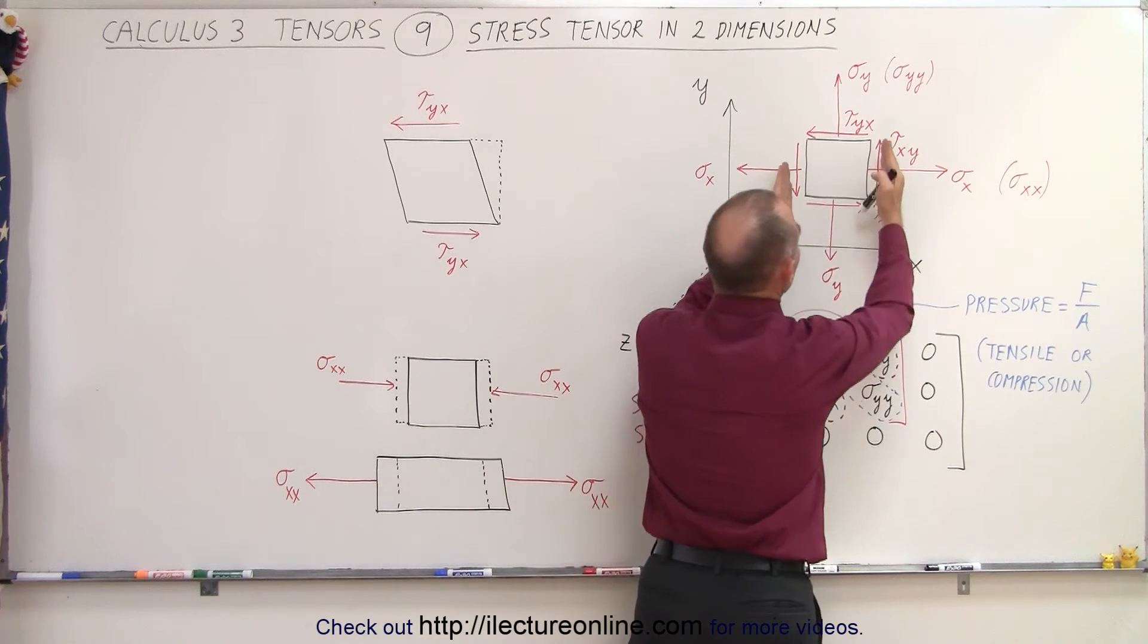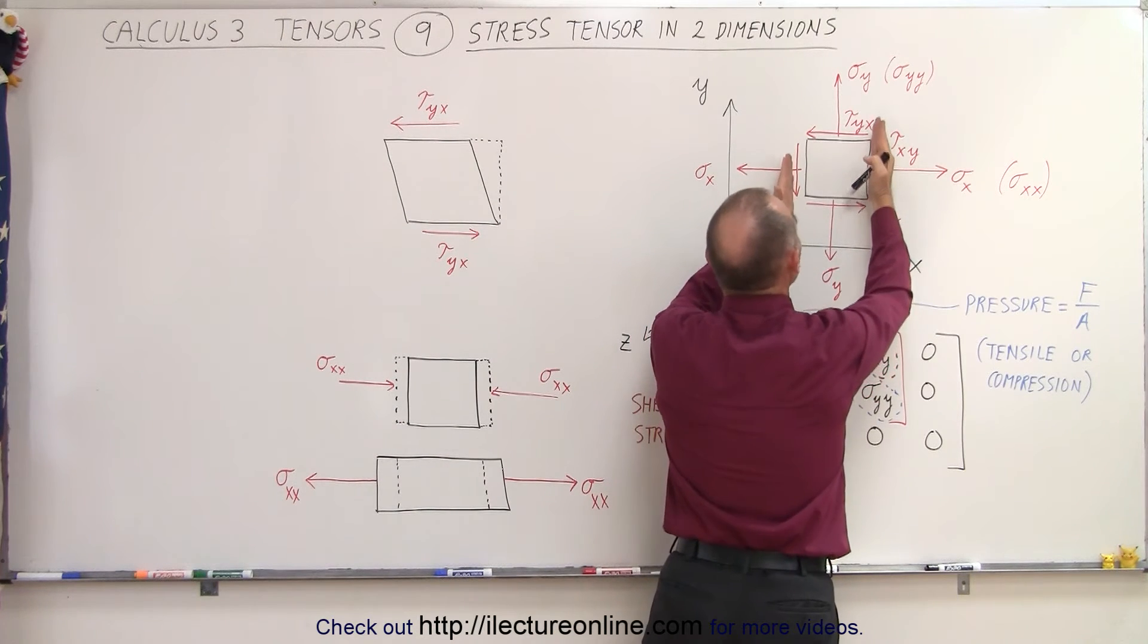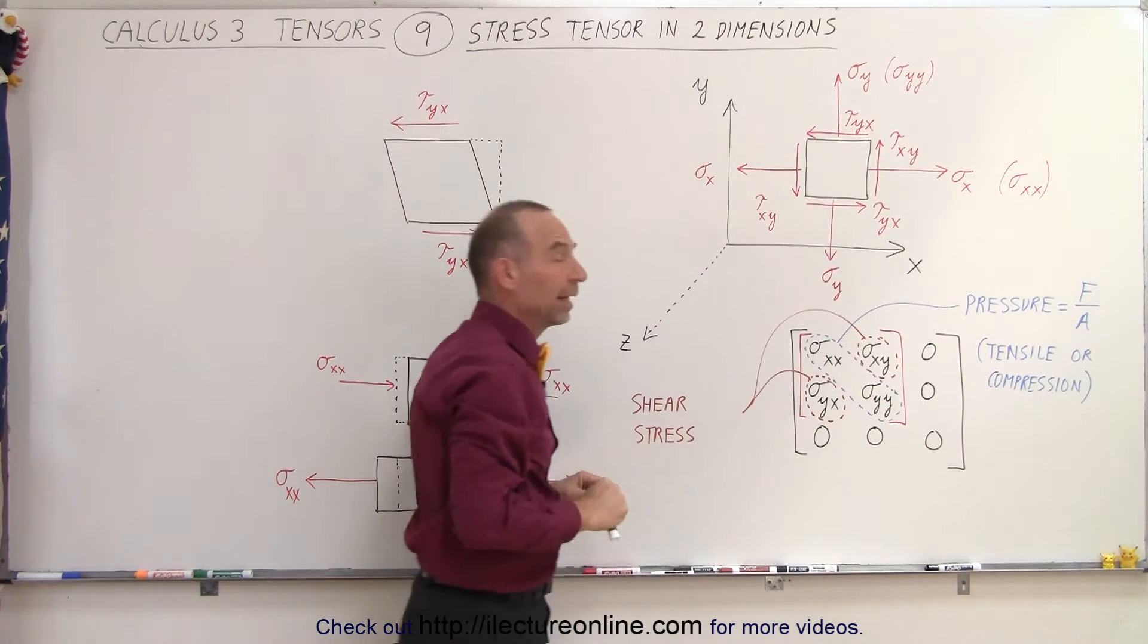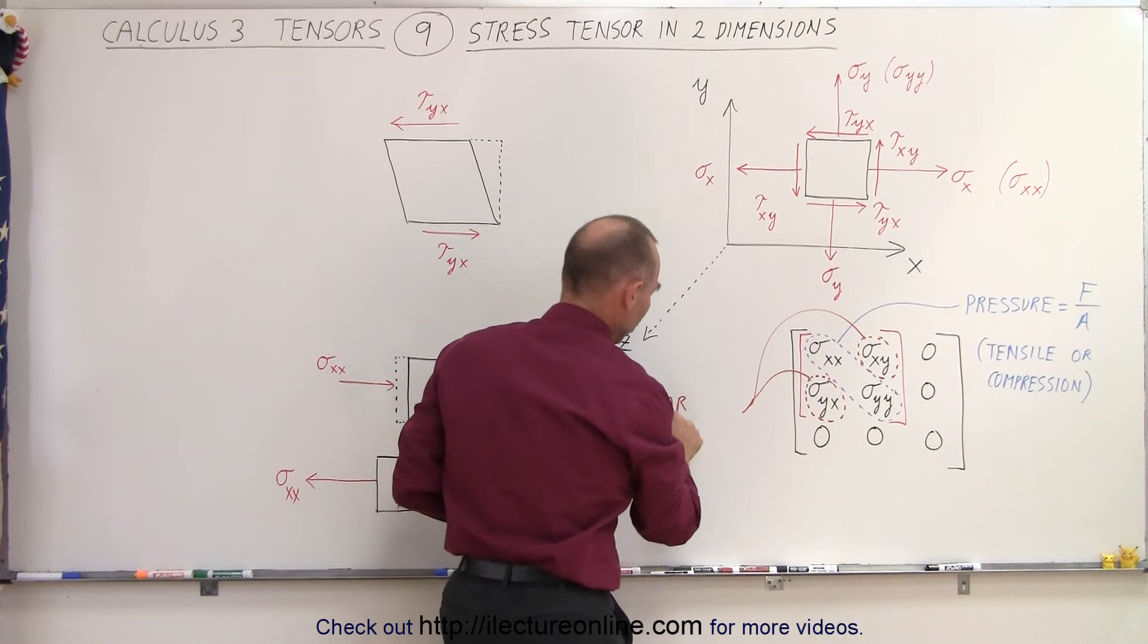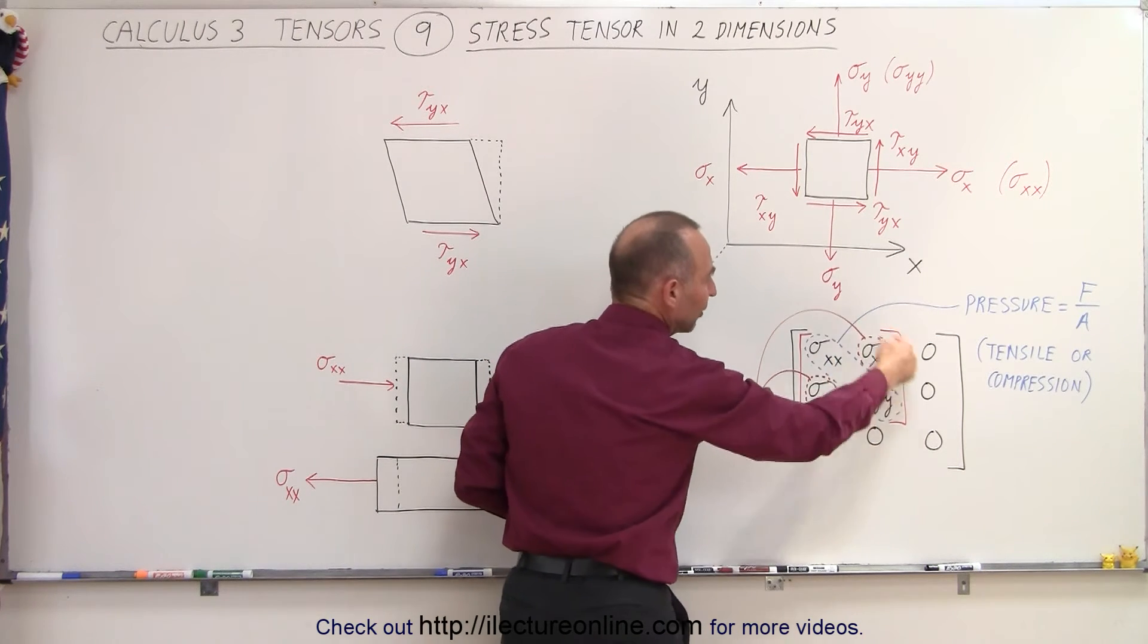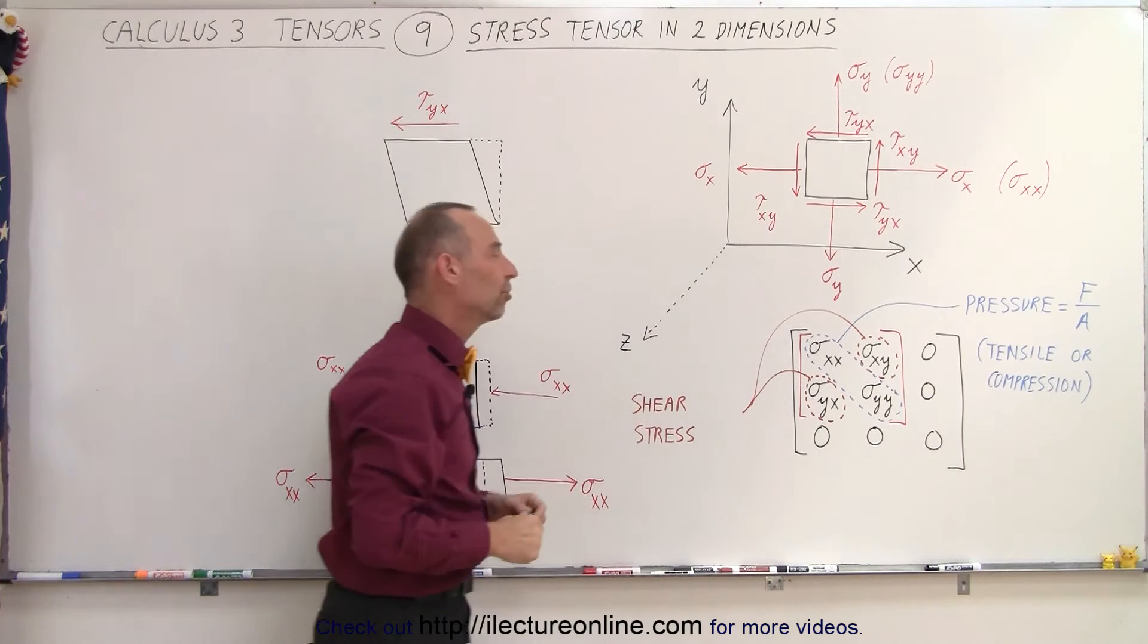We could have the same thing over here, where this whole thing would shear like this. These are what we call the shear stresses, and they become the off-diagonal components of this two-dimensional tensor format.